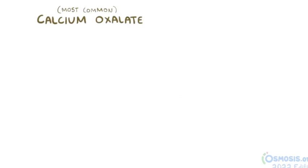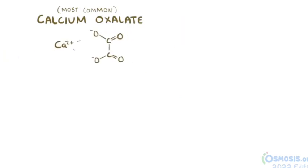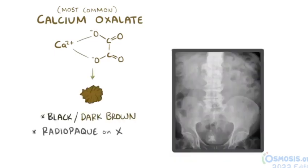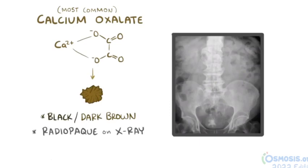In the majority of cases, the inorganic precipitate is calcium oxalate, formed by a positively charged calcium ion binding to a negatively charged oxalate ion, which results in a black or dark brown colored stone that's radio-opaque on an x-ray, meaning that it shows up as a white spot.